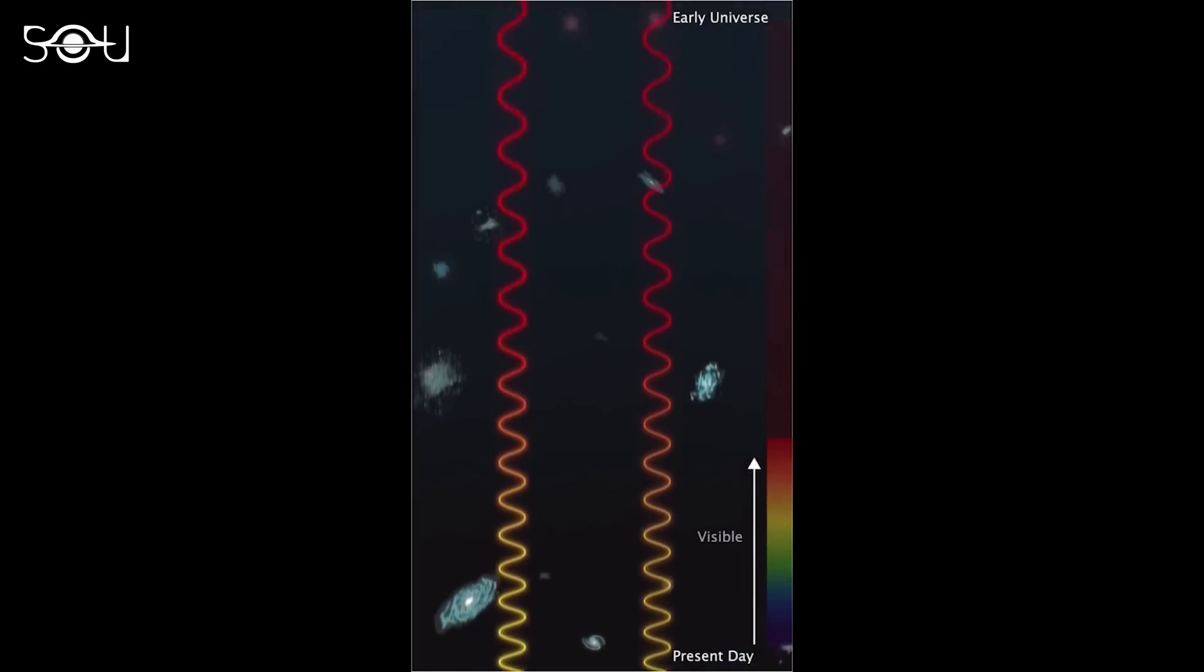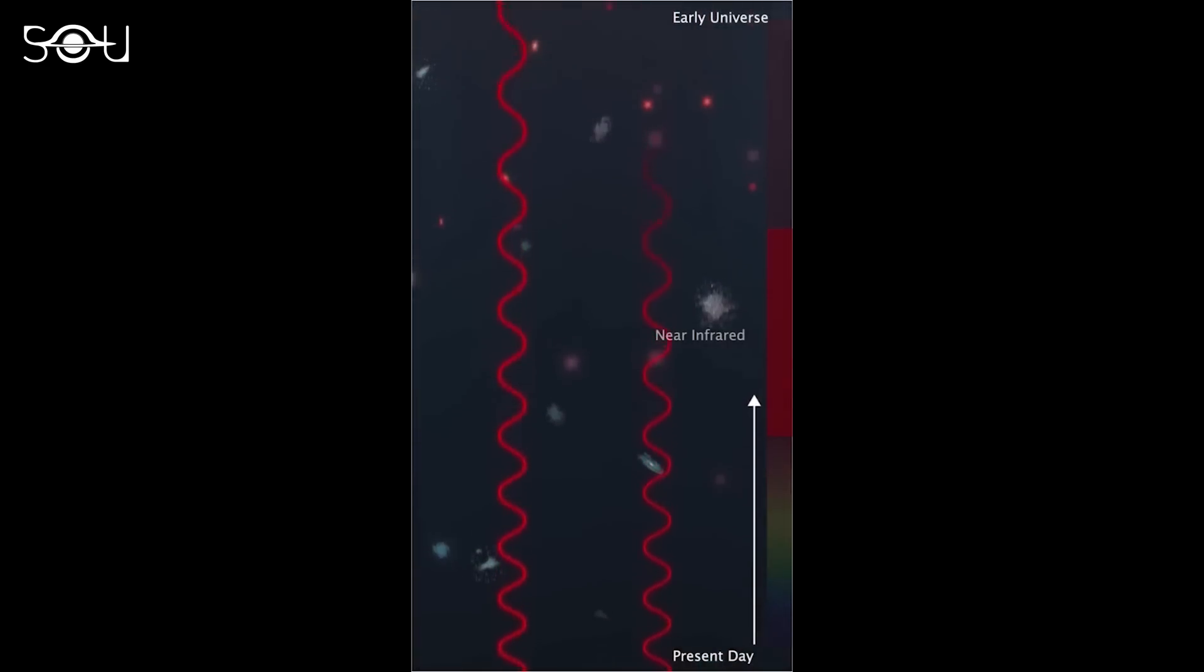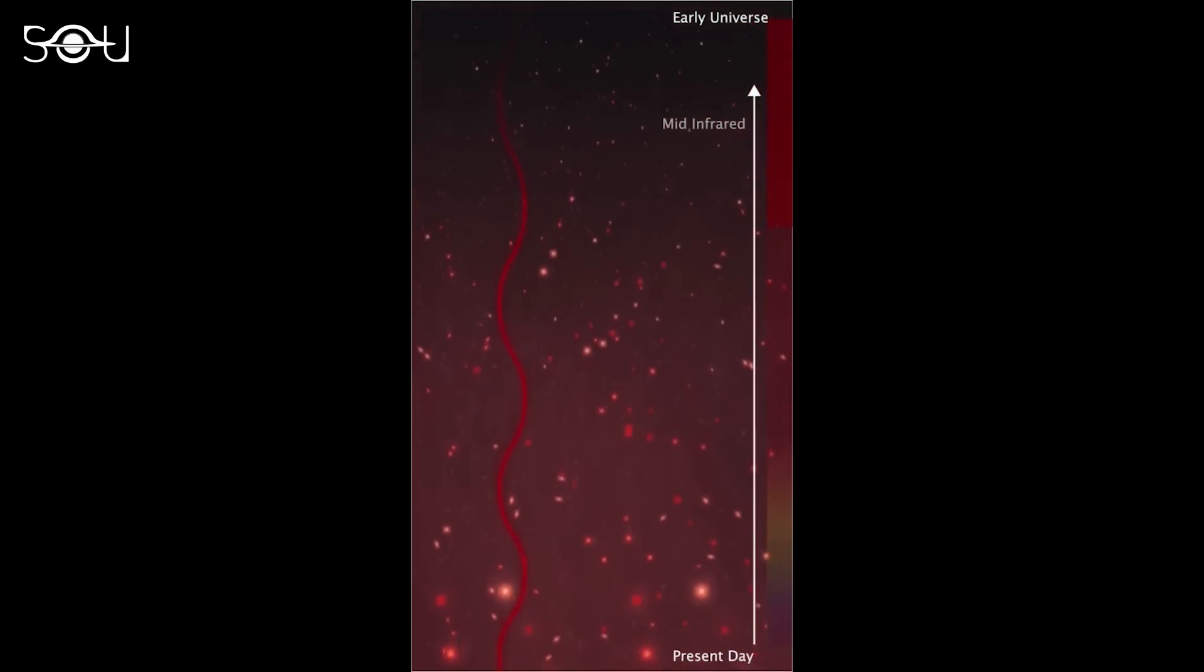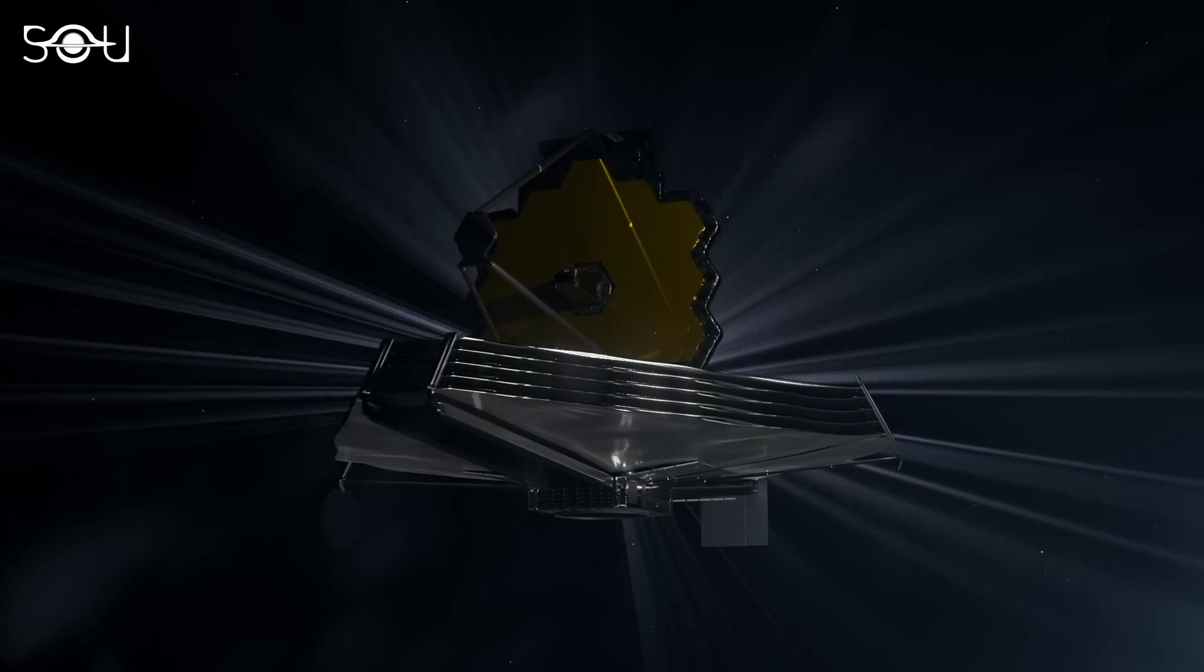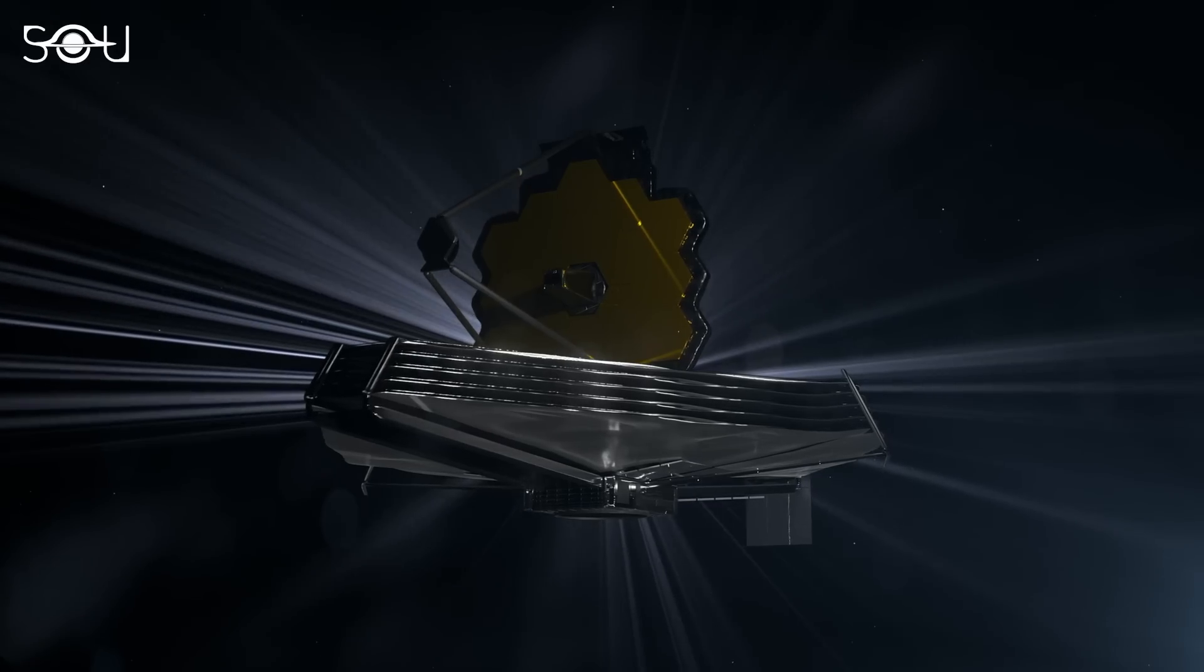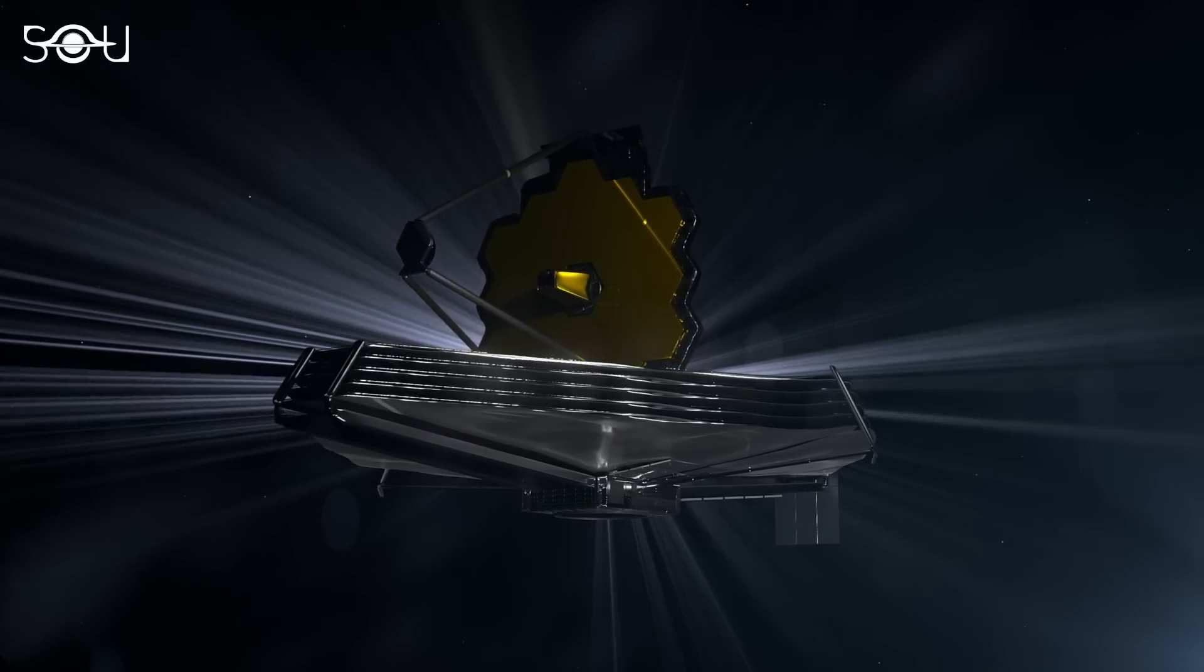For example, Hubble's near-infrared capabilities can look back up to 500 million years after the Big Bang. But Webb's mid-infrared instruments can go further back in time, up to 250 million years after the universe began. So astronomers believe that the James Webb Space Telescope can easily break Hubble's look-back time record.